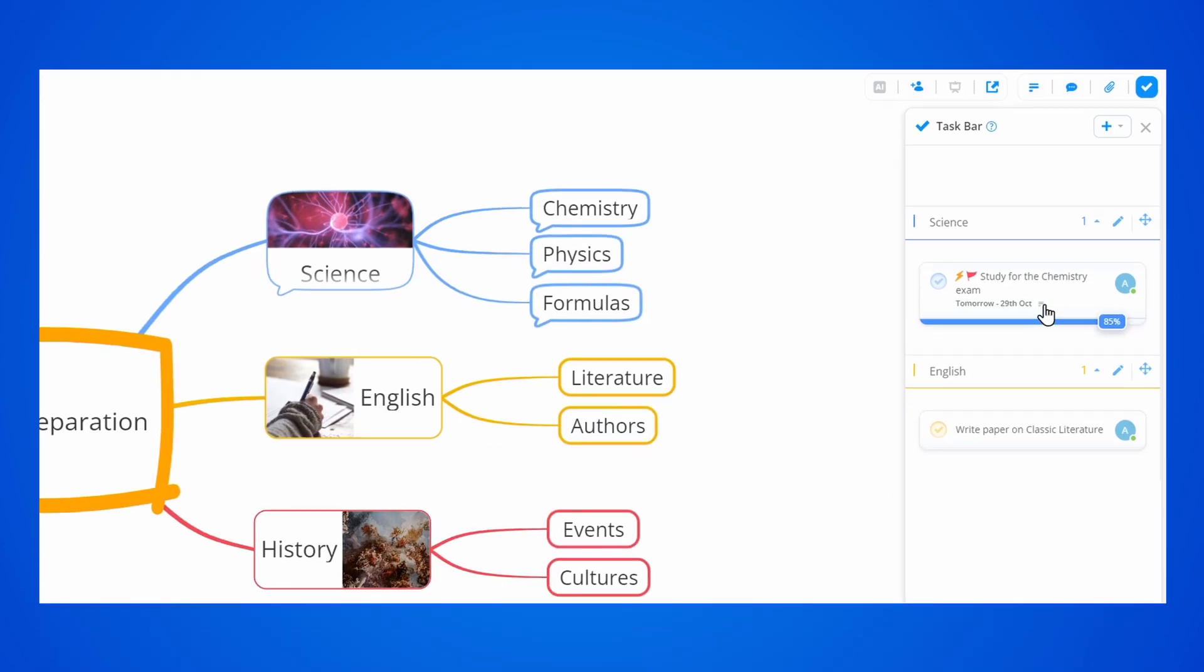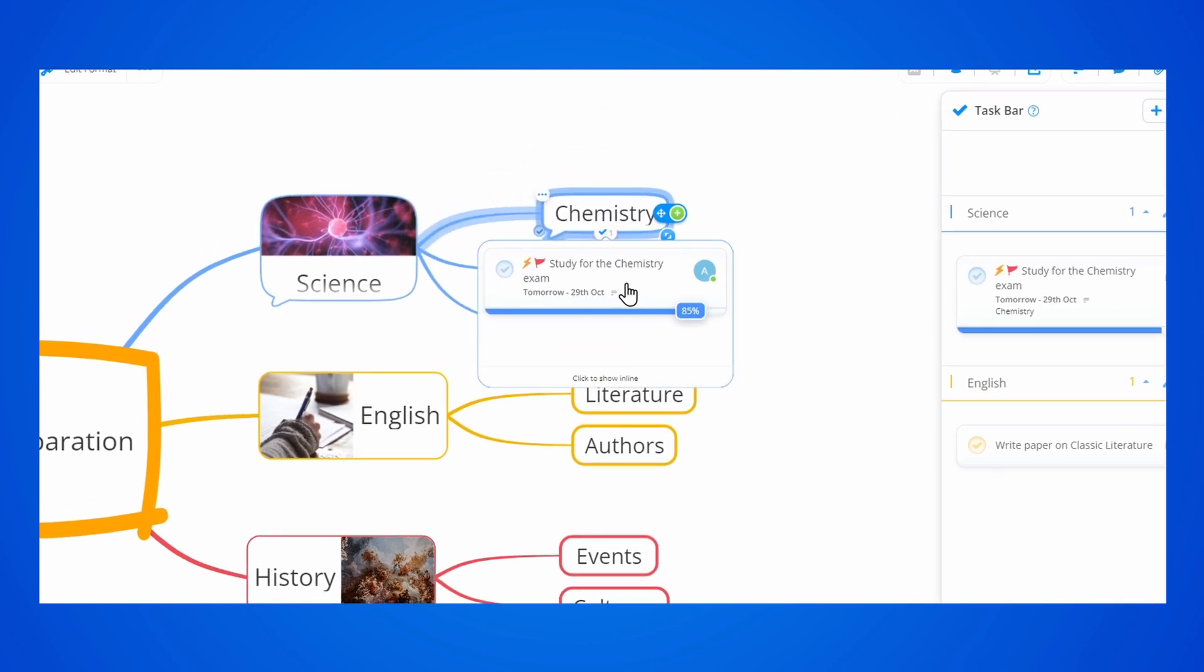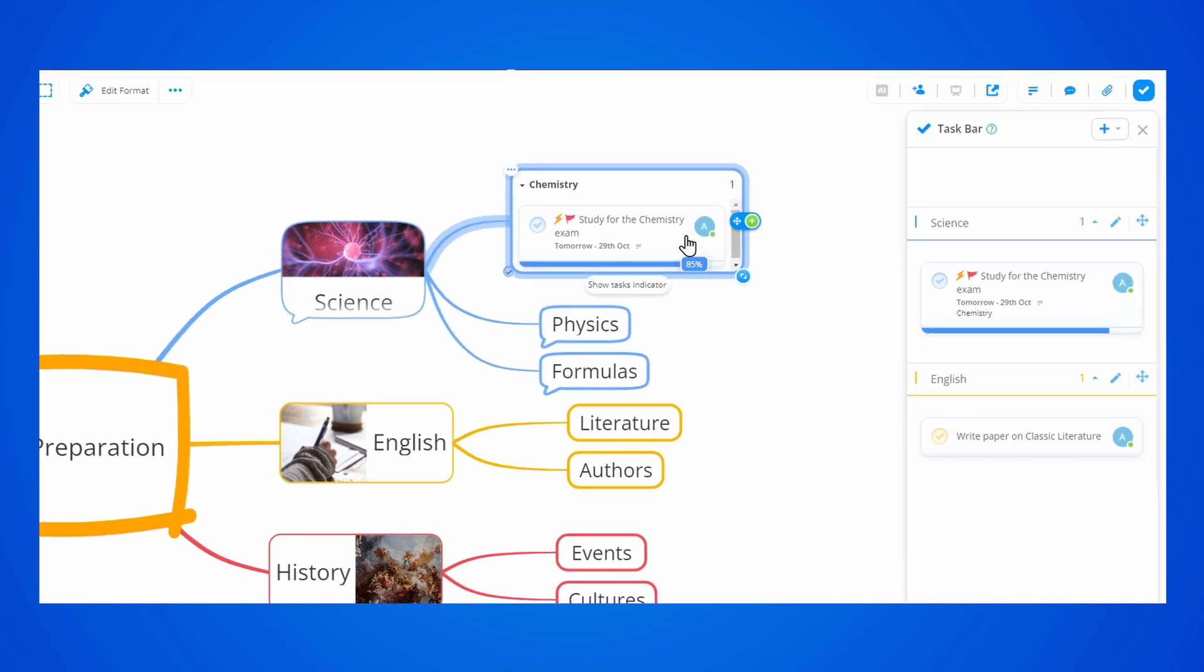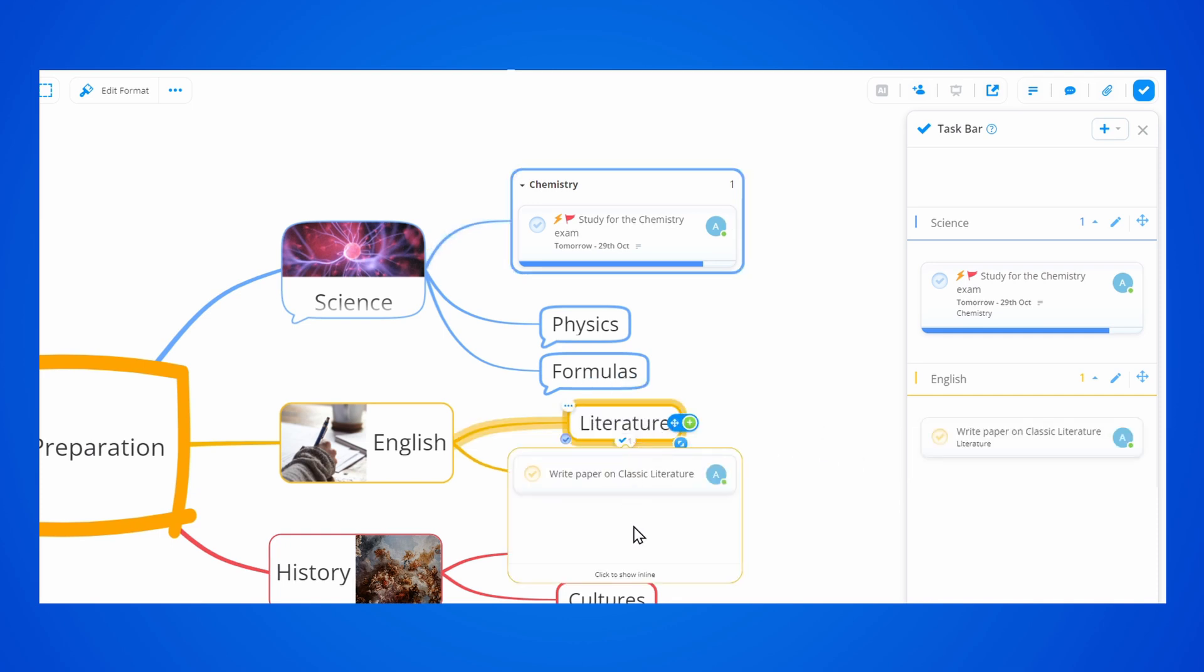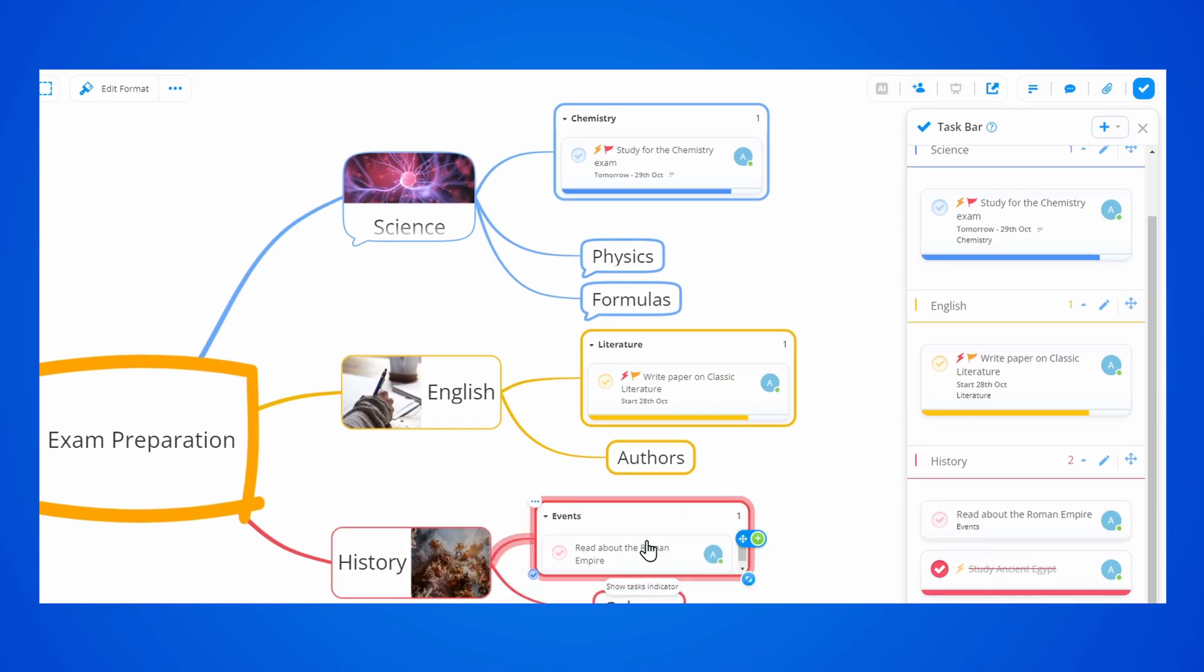Once you have your tasks ready, you can link them to any of your MyMap's branches. Just drag and drop them, and you can view them directly onto the MyMap. You can also drag and drop and move them between different branches at any point. This makes it really easy to work on your ideas and manage your to-dos at the same time.